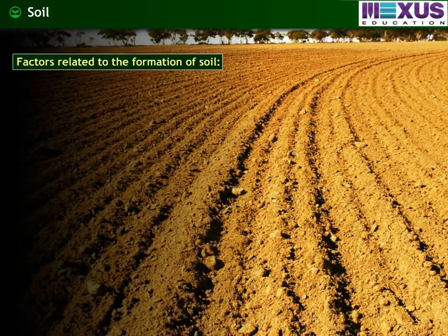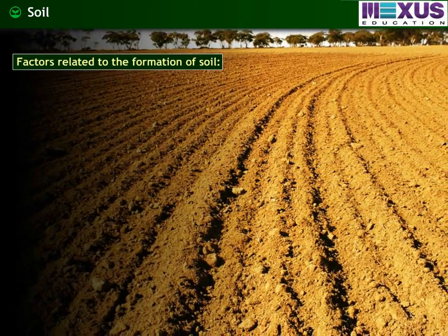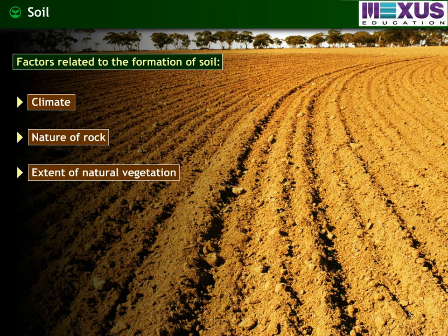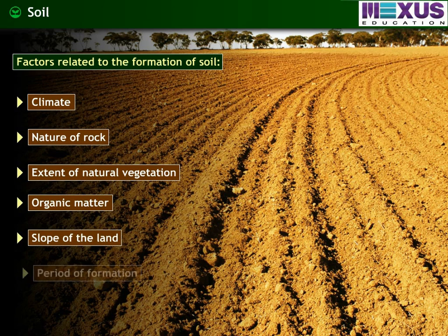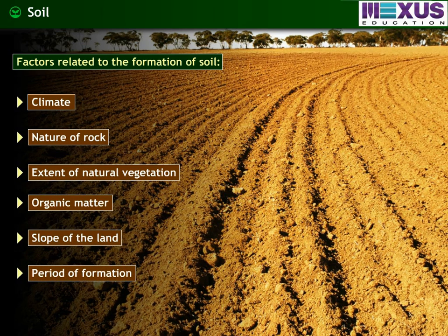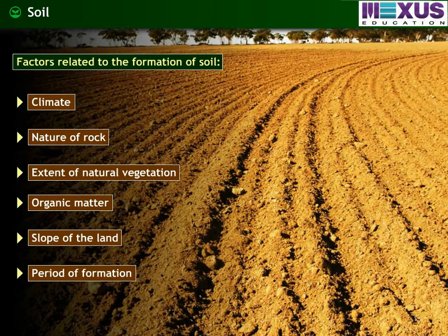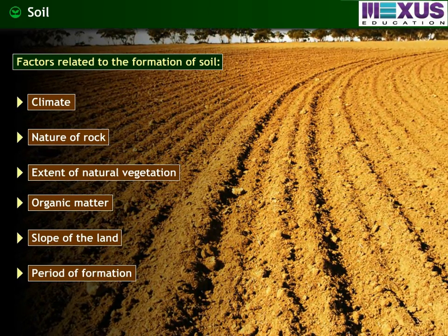Factors related to the formation of soil are climate, nature of rock, the extent of natural vegetation, organic matter, slope of the land, and the period of formation. Types of soil depend on factors related to the formation of soil.